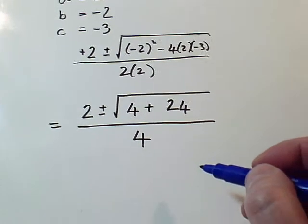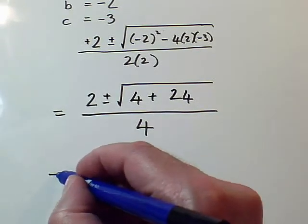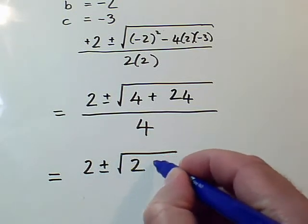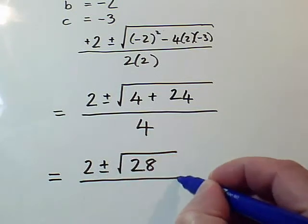And then I simplify at the next stage. So I get 2 plus or minus the square root of 28 all over 4.